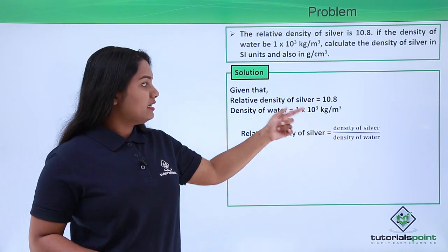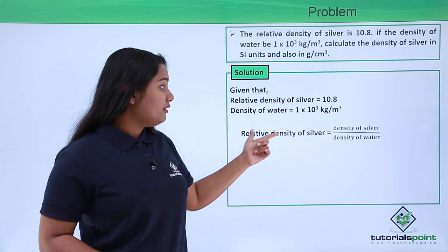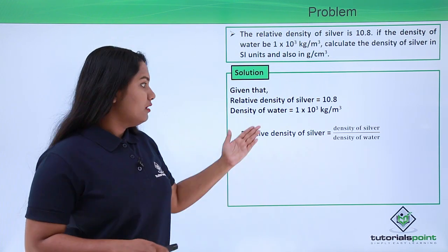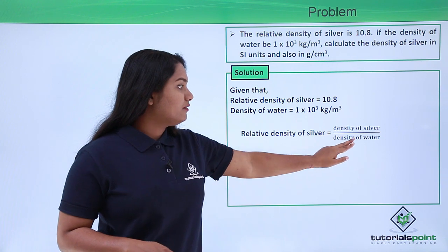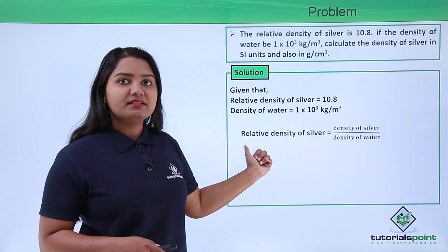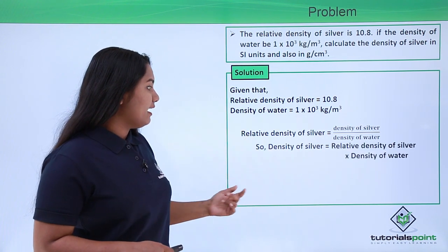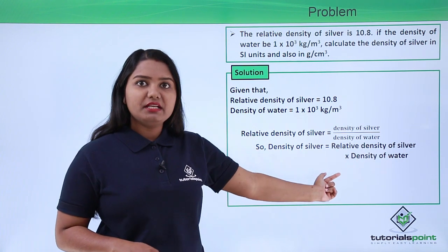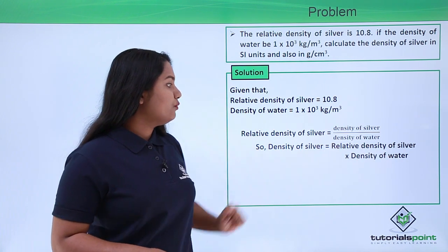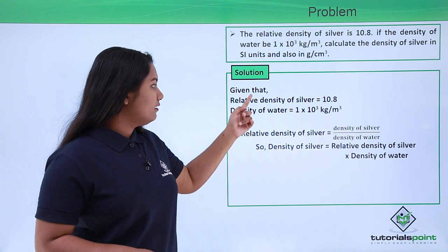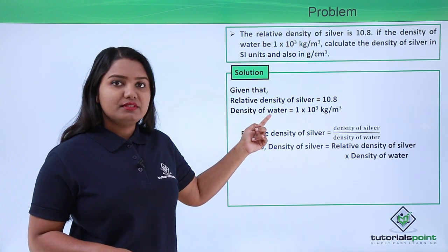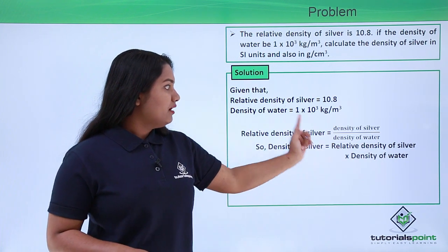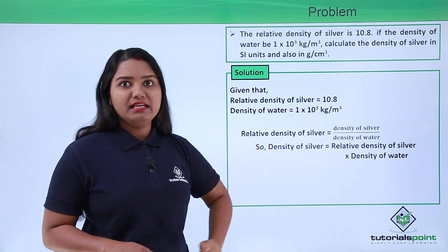Here we need to find out the density of silver; the relative density of silver is already given in the question. So for that, we can transfer the density of water to the other side. In doing that, we have the density of silver equals the relative density of silver multiplied by the density of water. We have already been given these two values, so we simply substitute them.